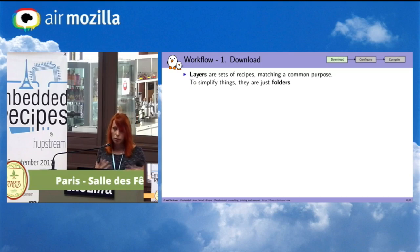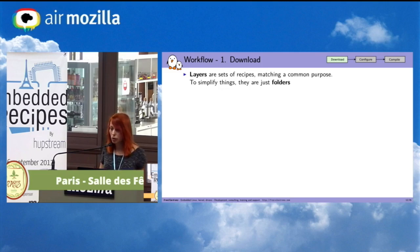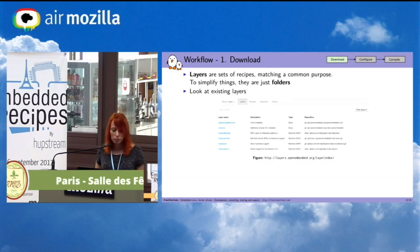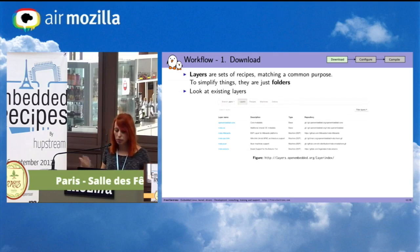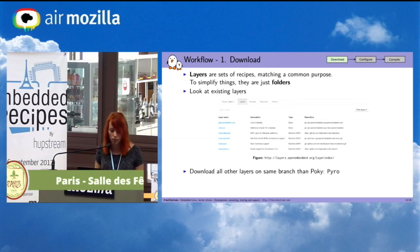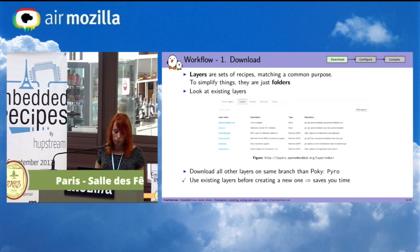Layers, as I told you, are a set of recipes that match a common purpose. To simplify things, you can see them as folders. There are many layers that already exist — for example, a layer for networking. When you download this layer, you will have additional applications about networking. There is a website that lists all the different layers you can find.